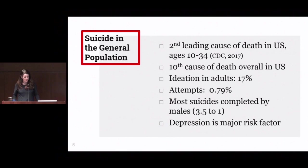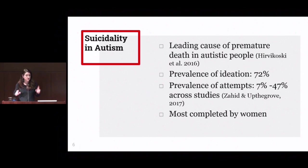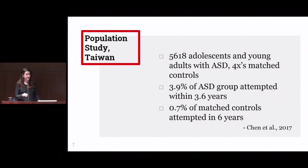The prevalence of suicidal ideation in people with autism is 72%, compared to just 17% in the general population. The prevalence of attempts, from a review of the literature that found only four studies, was identified at 7 to 47% in people with autism, compared to less than 1% in the general population. Interestingly, in people with autism, women are more successful in completing suicide than men, which is very different from the general population — an important result to keep in mind.